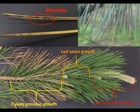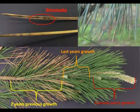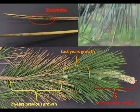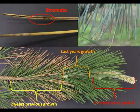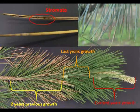Here you can see the fungal fruiting structure of Dothiostroma, called stromata, on a needle, and what the infection of previous year's growth looks like. It is important to note that the main symptoms of this disease usually begin to appear in the autumn following infection.